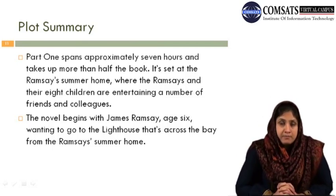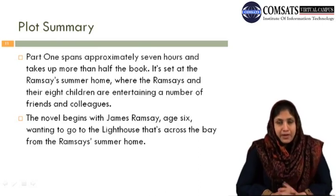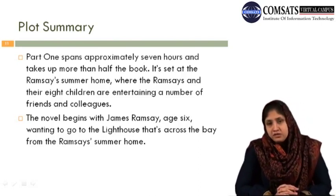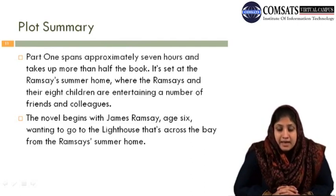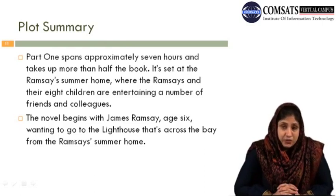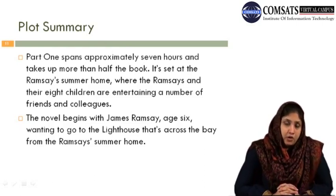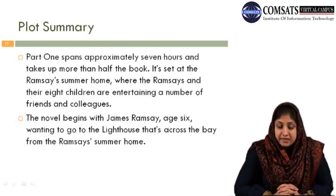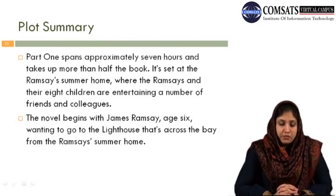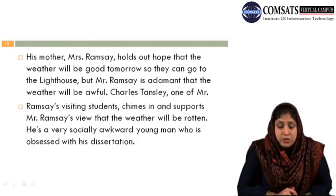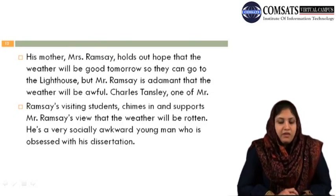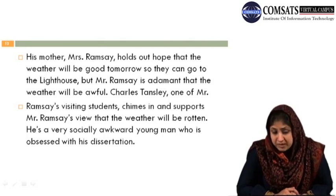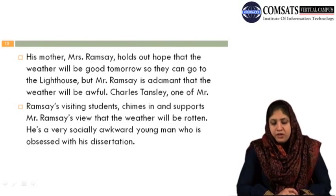Looking at the plot summary: Part One spans approximately seven hours and takes up more than half the book. It is set at the Ramsay summer home, where the Ramsays and their eight children are entertaining friends and colleagues. The novel begins with James Ramsay, age six, waiting to go to the lighthouse across the bay. His mother, Mrs. Ramsay, holds out hope that the weather will be good tomorrow so they can go, but Mr. Ramsay is adamant the weather will be awful. Charles Tansley, one of Mr. Ramsay's visiting students, chimes in and supports Mr. Ramsay's view.